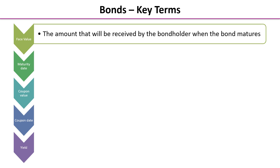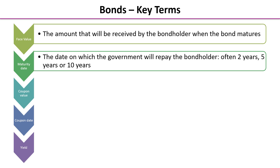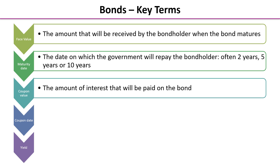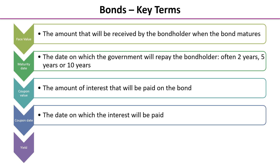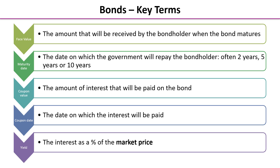The face value is the amount that will be received by the bond holder when the bond matures. The maturity date is the date at which the government will repay the bond holder — often bonds are two years, five years, or mostly 10 years. The coupon value is the amount of interest that will be paid on that bond each year. The coupon date is the date that the interest is paid, and the yield is the interest as a percentage of the market price — not the face value, but the price the bond sells at at that time.